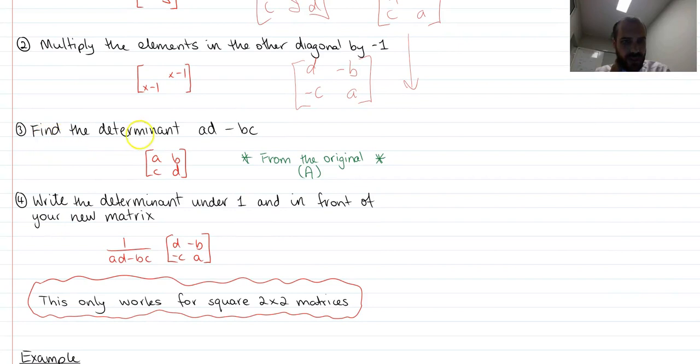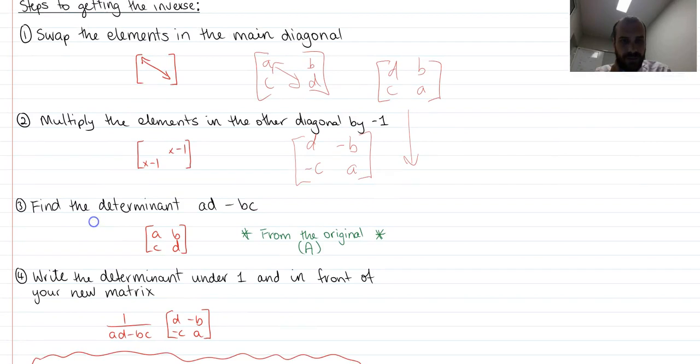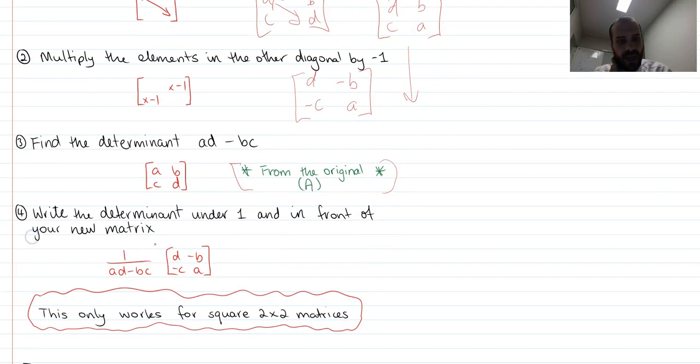Now find the determinant A, D minus B, C. So to do this bit from the original A, we need to go back up to the top and find out what A times D minus B times C is, and then we put it all together into this calculation here. This is only going to work for 2 by 2s. Like I said before, 3 by 3s, there's a far more complicated way to do it.